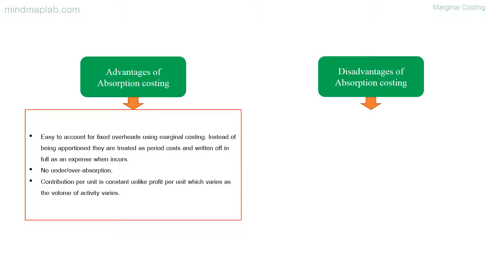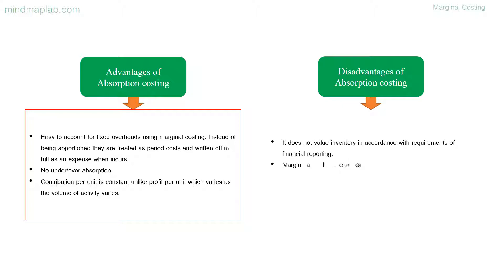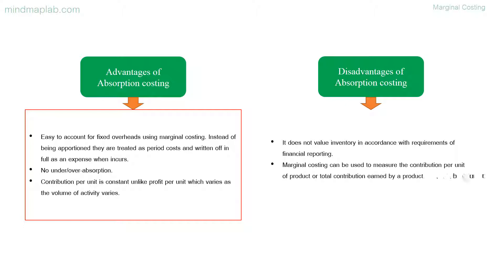Disadvantages of marginal costing: It does not value inventory in accordance with the requirements of financial reporting. Marginal costing can be used to measure the contribution per unit of a product or total contribution earned by a product, but this is not sufficient to decide whether the product is profitable enough.